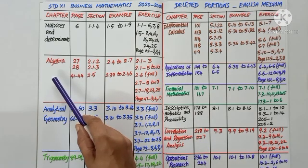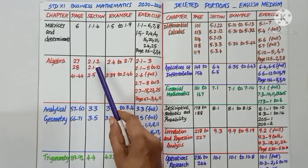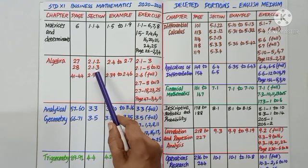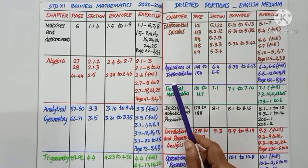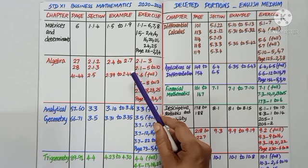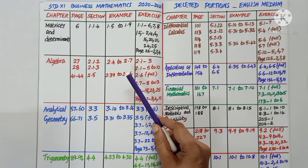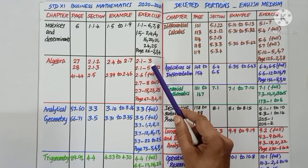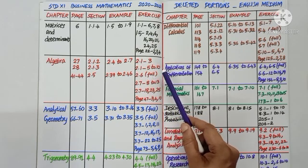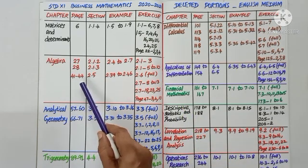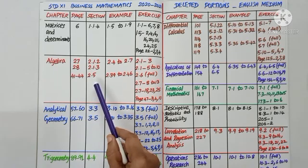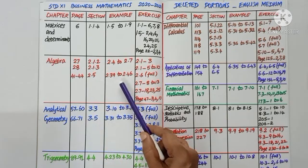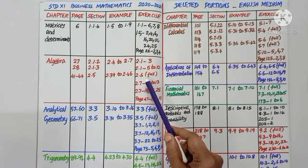Chapter 2: Algebra. Page number 27, section 2.1.2, and page number 28, section 2.1.3 — the partial fractions where the denominator is a linear factor repeated n times, or the denominator being a quadratic factor which cannot be factorized, are deleted. Examples 2.4 to 2.7, and in exercise 2.1, the third problem and problems 2.1, 5 to 10 are deleted. Page number 41 to 44, section 2.5 — Binomial theorem and problems based on it are deleted. Examples 2.39 to 2.46, and the full exercise 2.6 is deleted.